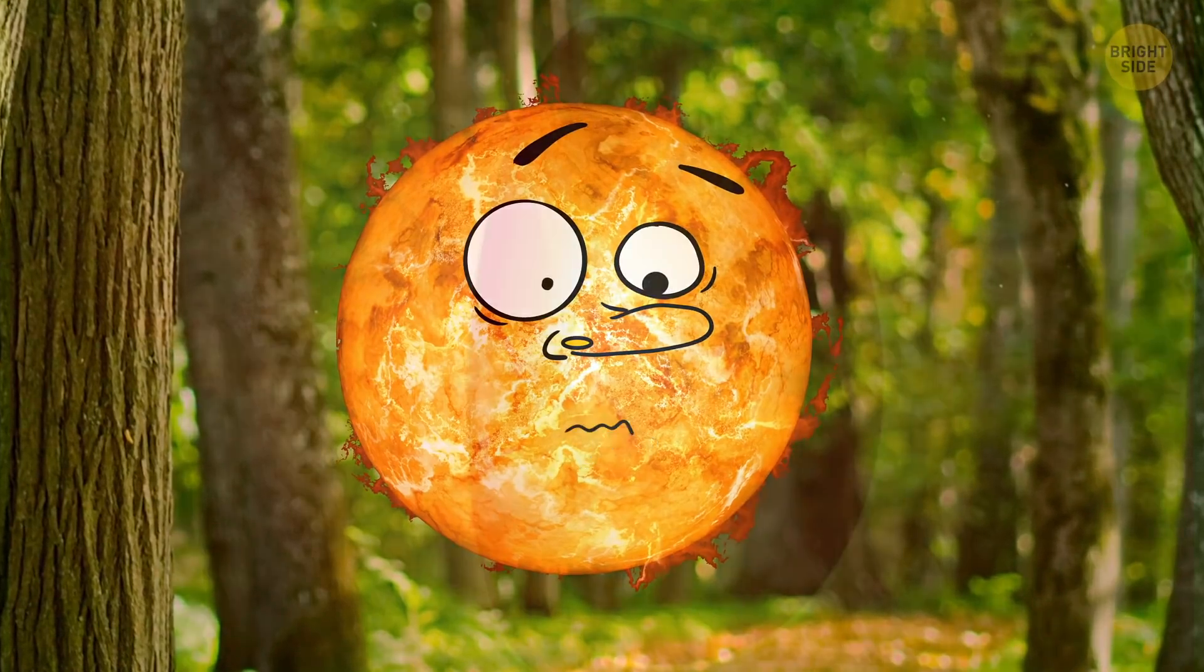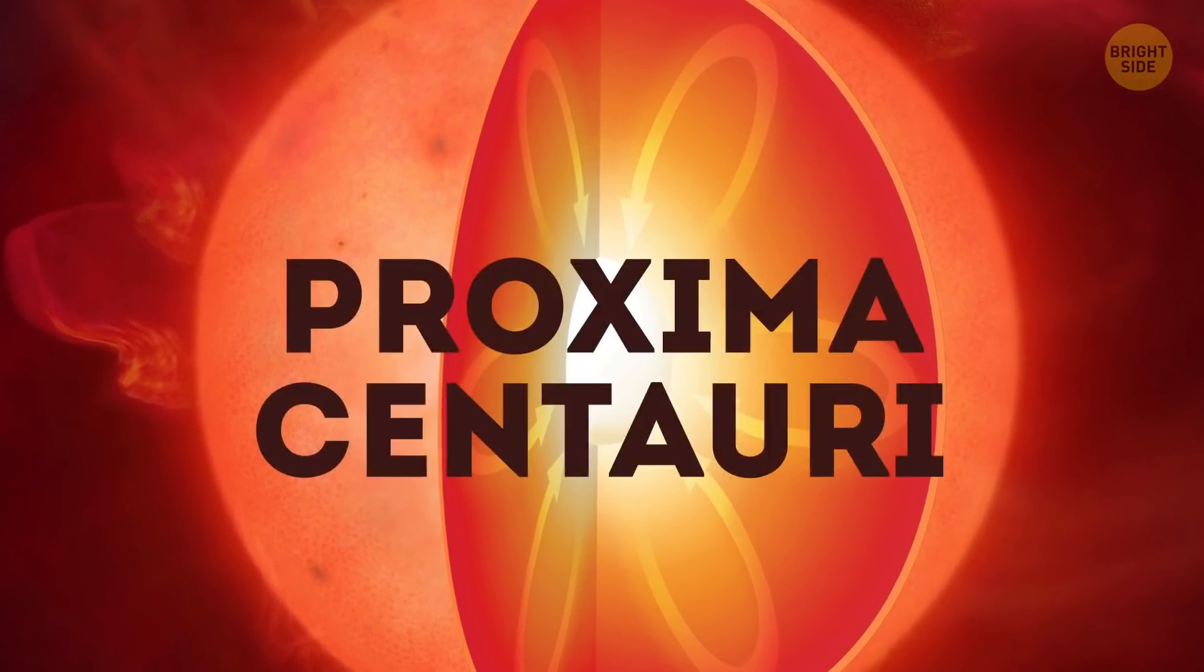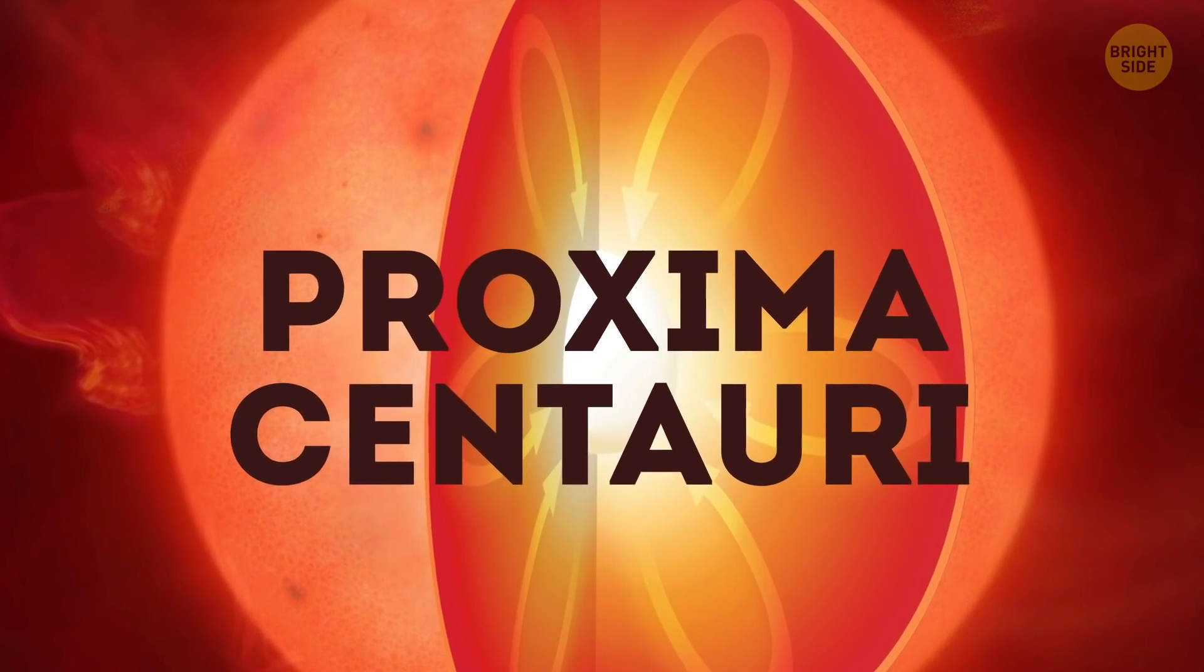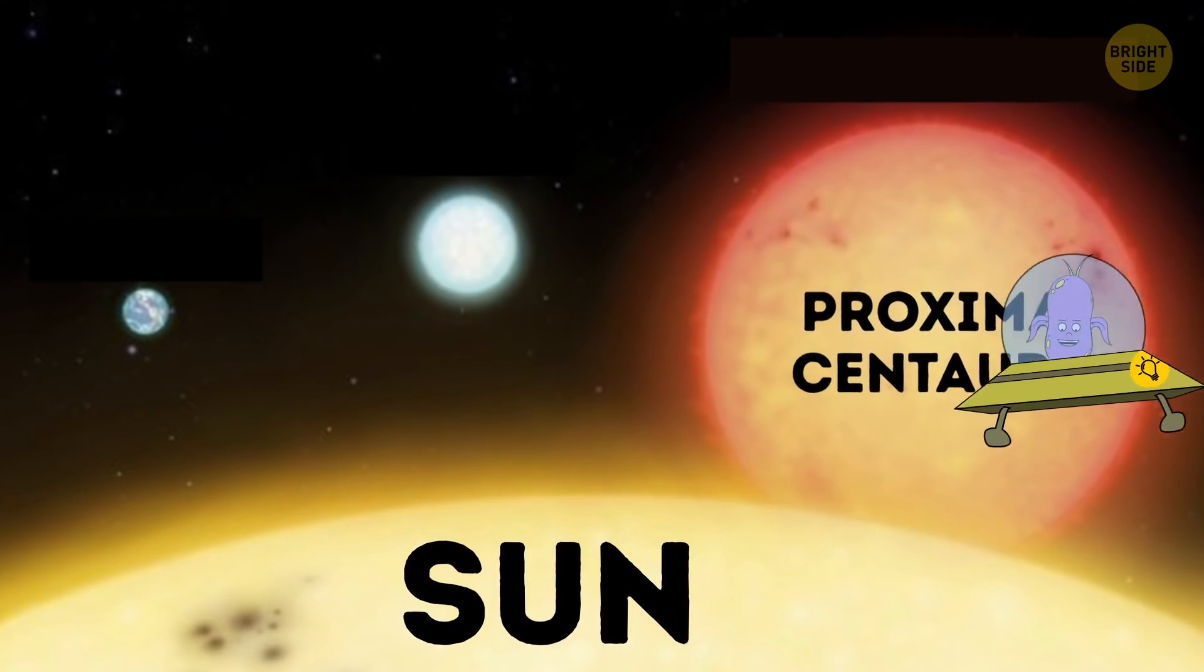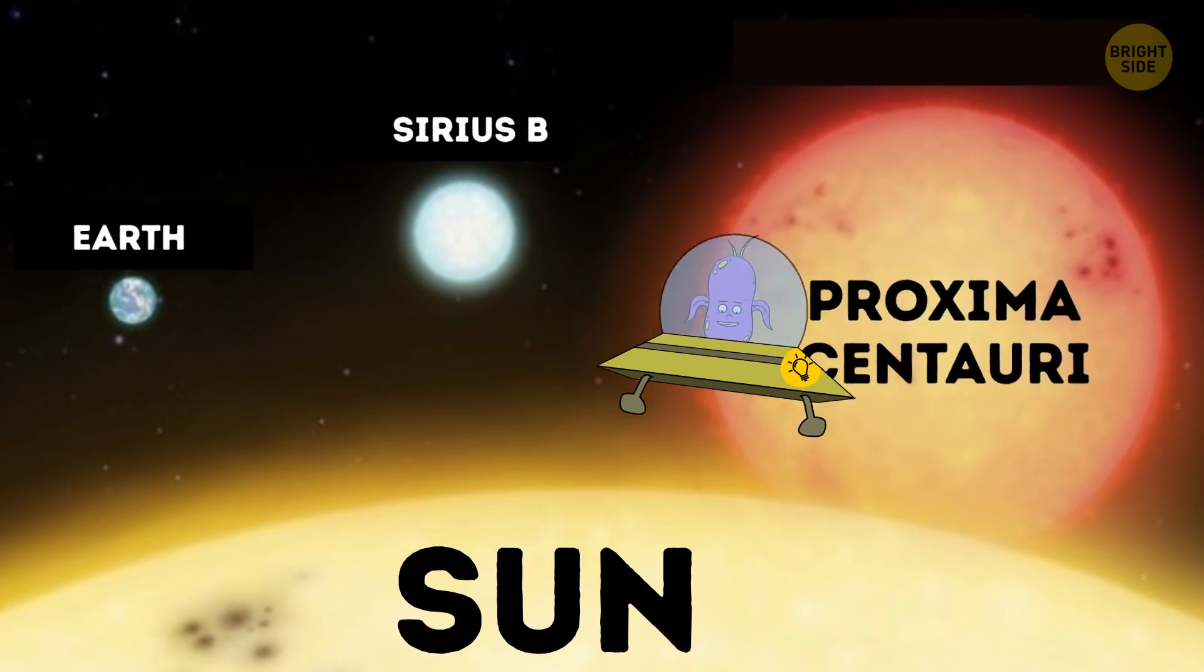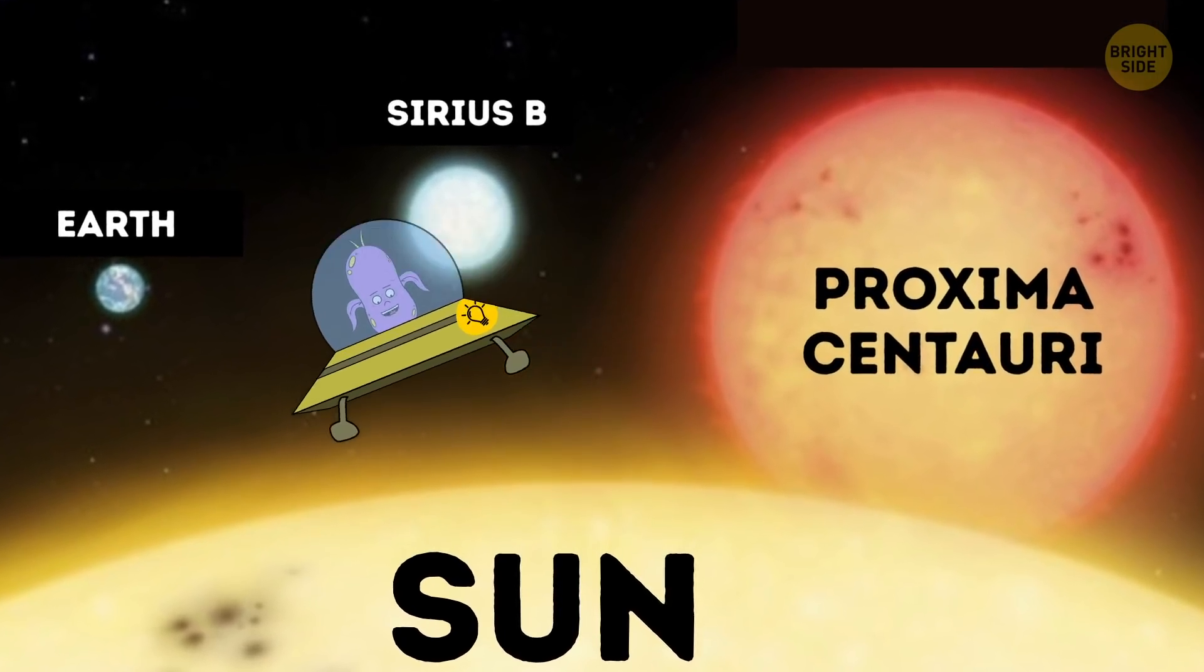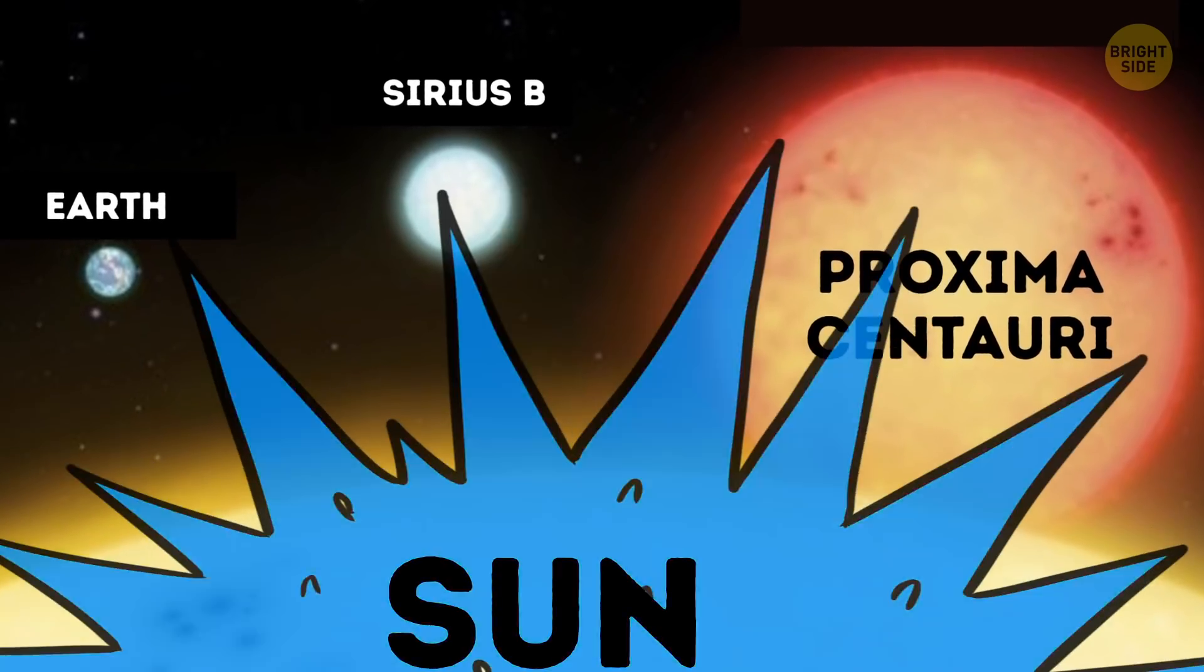Now, in your universe, the closest red dwarf to your planet is Proxima Centauri, which is around 4 light-years away. These stars are long livers of the universe. And our sun is likely to shine for another several trillion years before it becomes a blue dwarf.